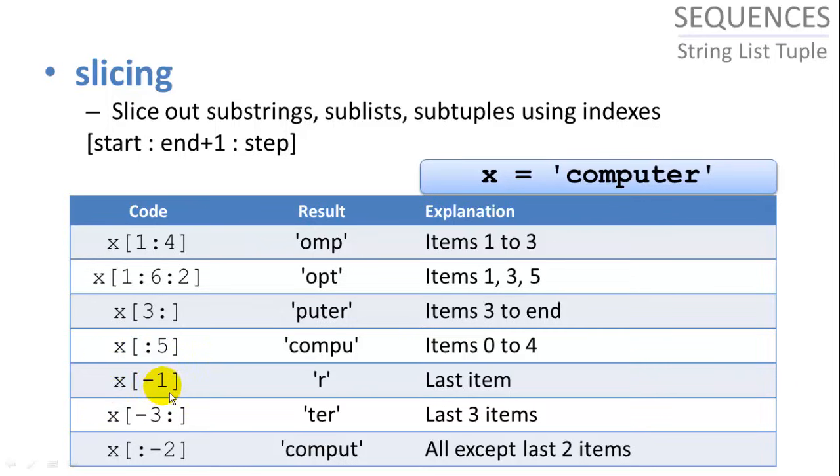And if we want to use negative numbers, here we can use negative one, which will give us the last item in a list or a sequence. So x of negative three colon nothing is going to give us the last three items in a sequence. And then if we have x colon negative two, we'll give us everything except the last two items in the sequence.